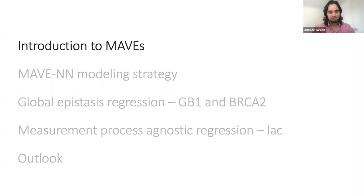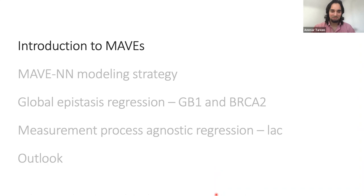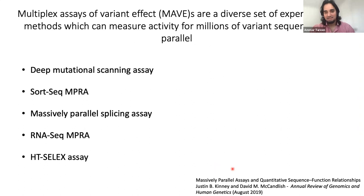My plan is to begin with an introduction to multiplex assays of varying effect, or MAVEs, and go over the framework I've developed to infer quantitative models of genotype-phenotype maps from data produced by these experiments. MAVEs are a set of highly diverse experimental methods which can measure molecular phenotypes or activity for thousands to millions of variant sequences in parallel, thanks to ultra-high-throughput sequencing methods.